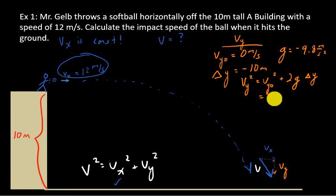Well, Vy naught is 0, plus 2 times negative 9.8, negative 10. That gives me that Vy squared is equal to, if you multiply that out, 196. So Vy, take the square root of 196. Well, that's convenient. It's exactly 14 meters per second. So I know Vy.